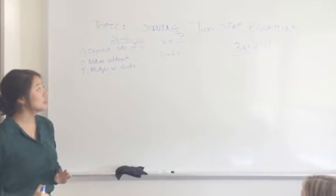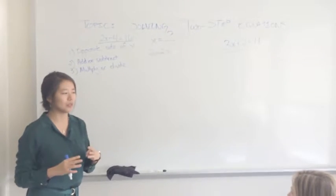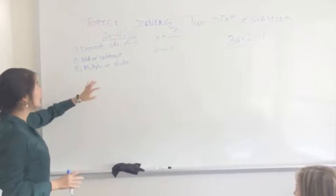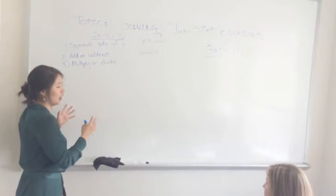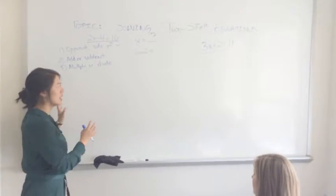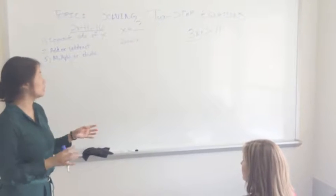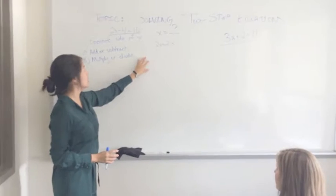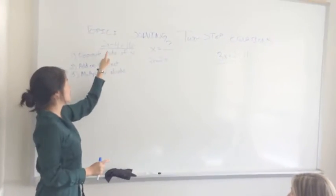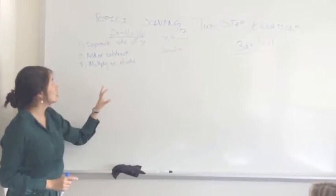So even though it says two step equations, I like to think of it in three steps. And we already did the first step. The first step is figuring out what side x is on and figuring out what side do we need to get all the numbers to? We need to get them to the opposite side of x. So there, first step done. We know we need to get all the numbers to this side of the equation because we have x on this side.